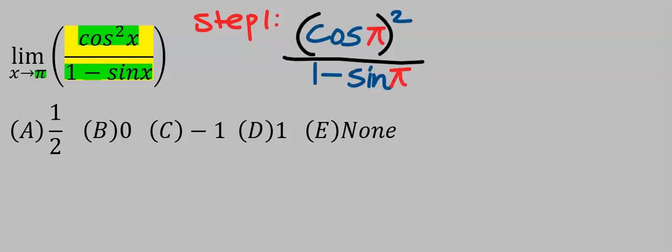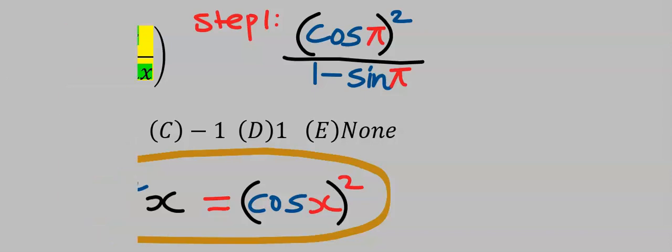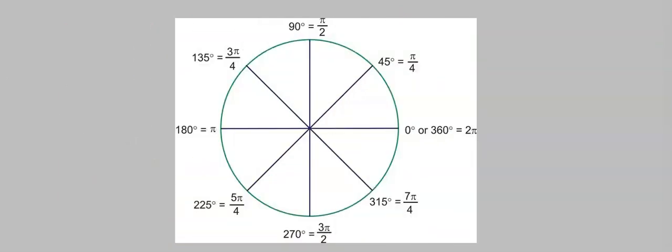Wherever I see x, I'm going to put pi. But remember, cos²x is the same thing as cos x all squared. Subsequently, radians are alternate units used to measure angle in trigonometry instead of degrees.